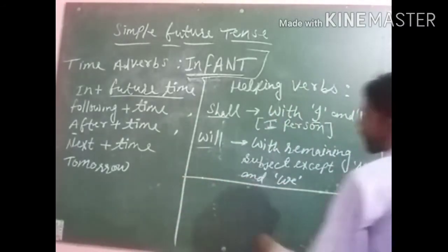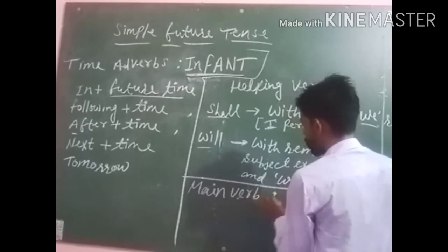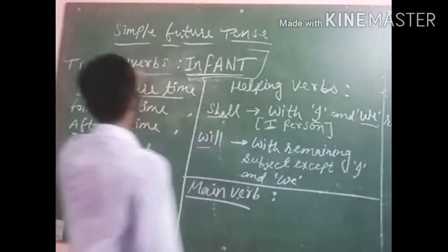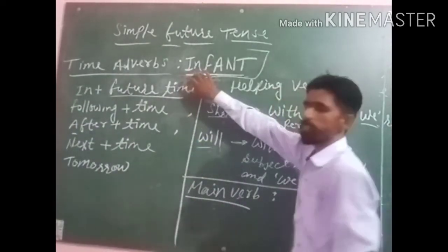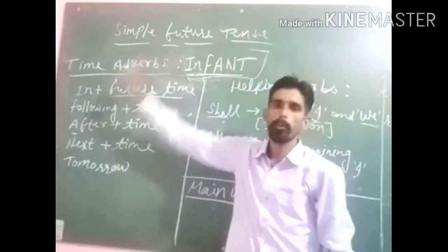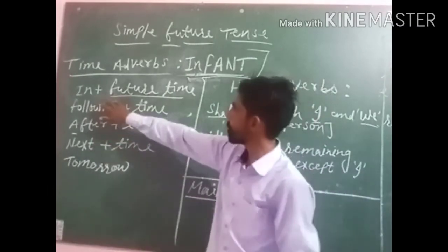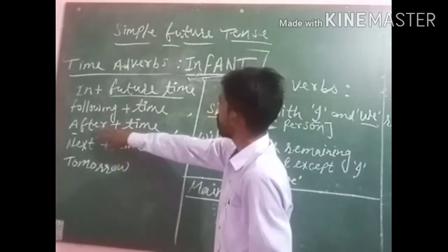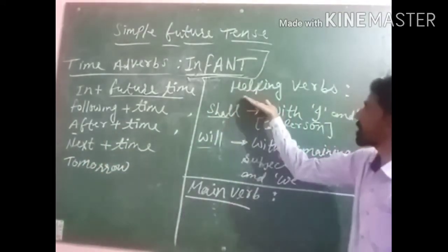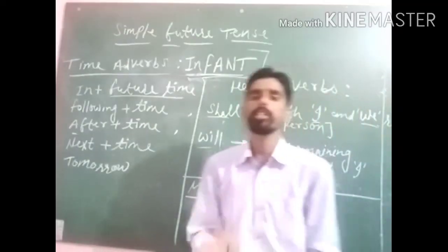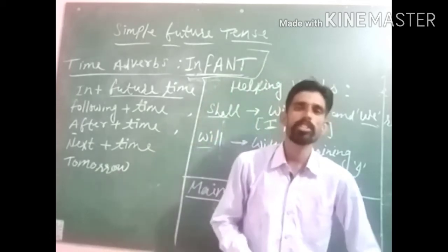The next point is main verb. The main verb used in simple future tense is the first form or base form. So these are the three things: first, time adverbs — which can be learned using the trick INFANT; second, helping verbs — shall and will; and third, main verb in first form.